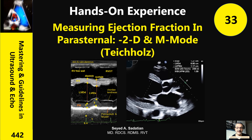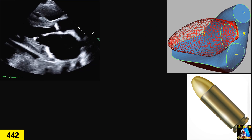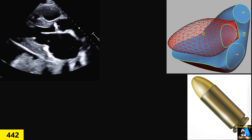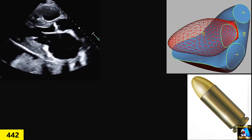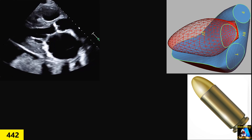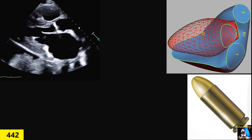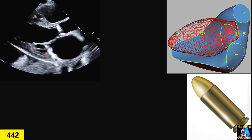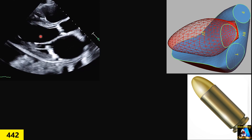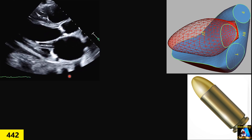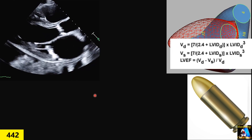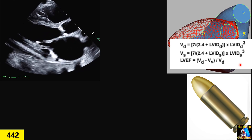Welcome to Mastering Guidelines in Ultrasound and Echo. Another technique for measuring ejection fraction is measuring left ventricular internal diameter or dimension in diastole and in systole, using the formula we call the Teichholz formula technique.